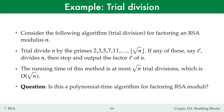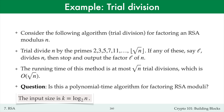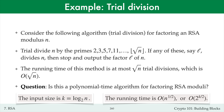Is trial division a polynomial time algorithm for factoring RSA moduli? The answer is no. The input to the problem is a number n. The input size is log n bits, which I'll call k. Hence, the running time big O of n to the one-half can be written as big O of 2 to the power k over 2, since n is roughly 2 to the k, and this expression is fully exponential in k. Thus, trial division is a fully exponential time algorithm. This matches our intuition that trial division is a very slow algorithm for large numbers n.